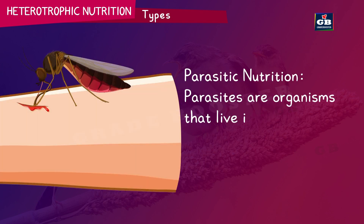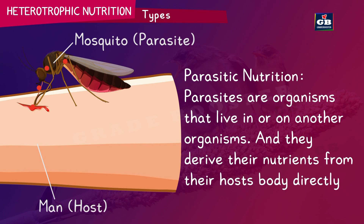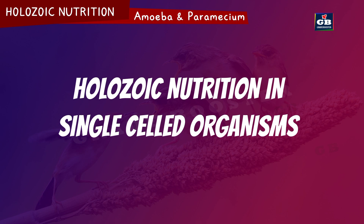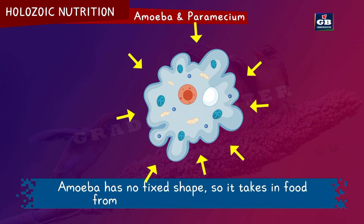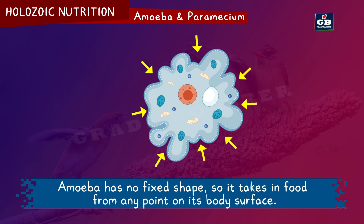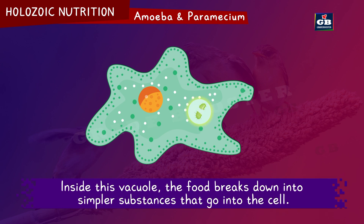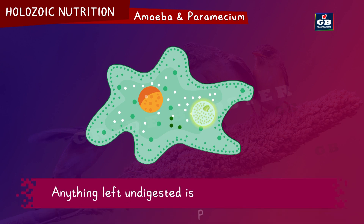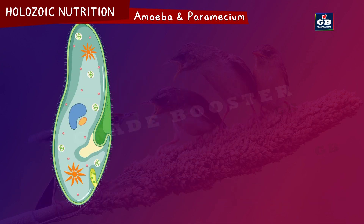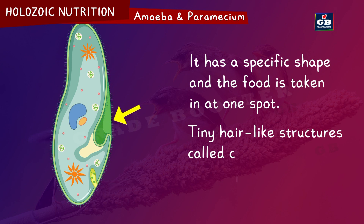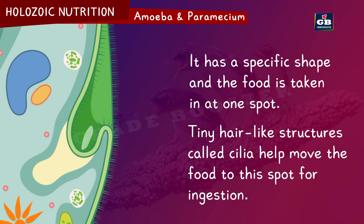Parasitic nutrition: Parasites are organisms that live in or on other organisms and derive their nutrients from their host. Parasitic nutrition is commonly observed in various species of plants, animals and microorganisms. Holozoic nutrition in single-celled organisms — Amoeba: Amoeba has no fixed shape so it takes in food from any point on its body's surface. It grabs food using finger-like extensions and forms a food vacuole. Inside the vacuole, food breaks down into simpler substances that enter the cell; anything left undigested is pushed out. In paramecium, which has a specific shape, food is taken at one particular spot, and tiny hair-like structures called cilia help move the food to that spot for ingestion.